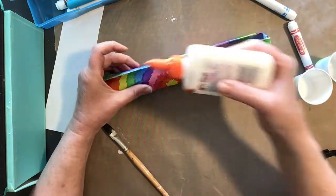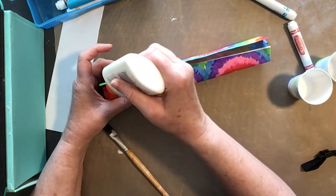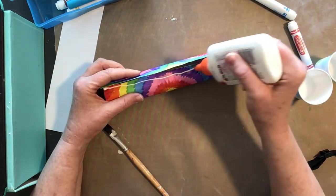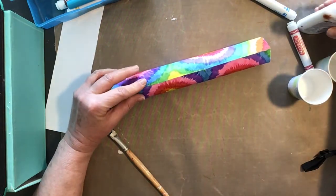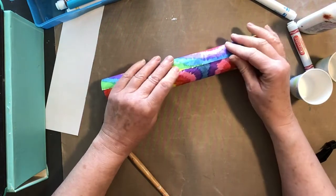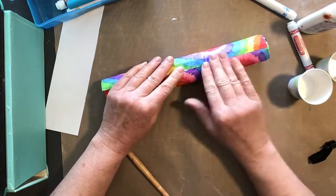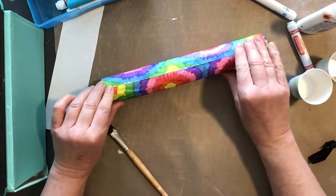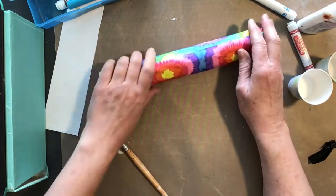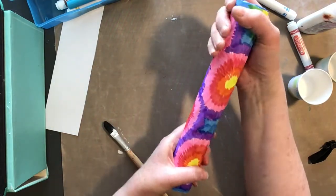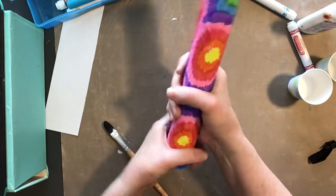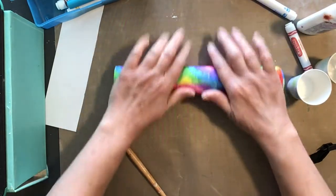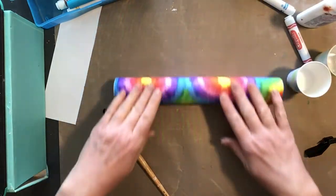On the very end, run some glue along the edge and make sure that's sticking down really well. Really rub it. It might get a little wrinkly, but it should smooth out once it dries.